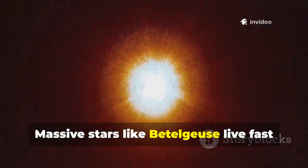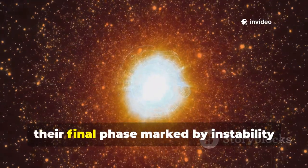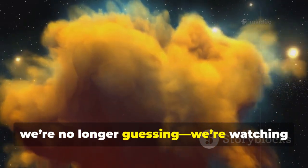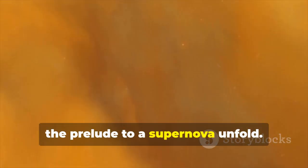Massive stars like Betelgeuse live fast and die young, their final phase marked by instability and chaos. Thanks to Webb we're no longer guessing, we're watching the prelude to a supernova unfold.